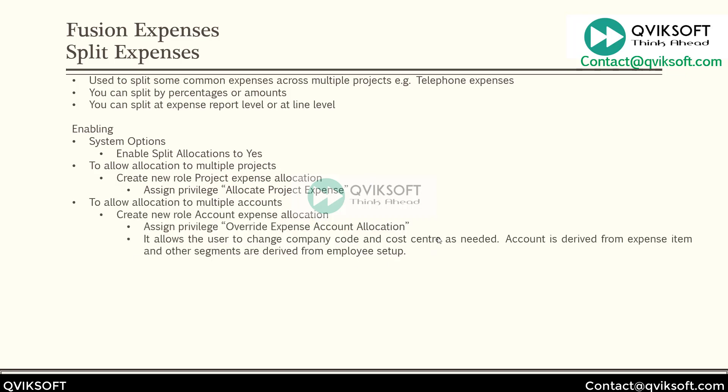That was project-related. Now if you want to allow allocation to multiple accounts, similar to projects, you have to assign this privilege: 'Overhead Expense Account Allocation.' You can do the same approach — assign it to the employee role if you want to give it to everybody, but if you want to give it only to specific people, then assign this privilege to a new role and assign that role to whichever users you want to have this. Once you do this, it will allow the user to change company code and cost center as needed.